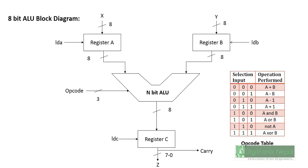In the 8-bit ALU block diagram, we have two 8-bit inputs X and Y, and load signals `ld_a` and `ld_b` for triggering Register A and Register B respectively. The N-bit ALU has a 3-bit opcode as shown in the opcode table, and provides a 9-bit result — 8 bits of sum and 1 carry bit. That 9-bit result is stored in Register C, which is triggered by load signal `ld_c`. This edge-triggered input differentiates the 9-bit output into carry and sum. This completes the 8-bit ALU block diagram representation.